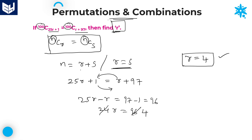You will get the answer either by taking n equal to r plus s, or r equal to s — you can use any of those two. I used the second condition to get the value of r. One important point: if you are unable to identify that the given question is in the form of nCr equals nCs, you cannot solve these kinds of problems. In permutations and combinations especially, some formulas and conditions are very important.